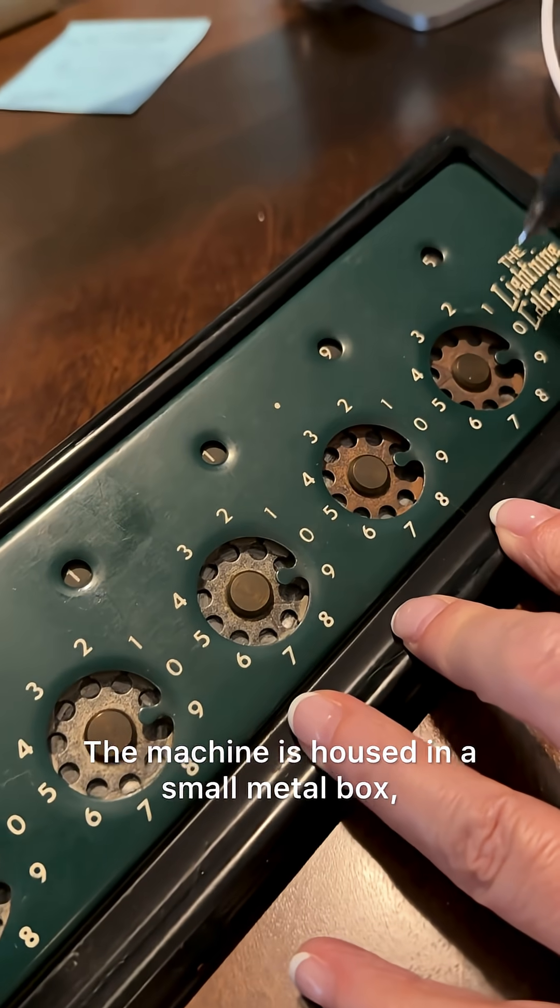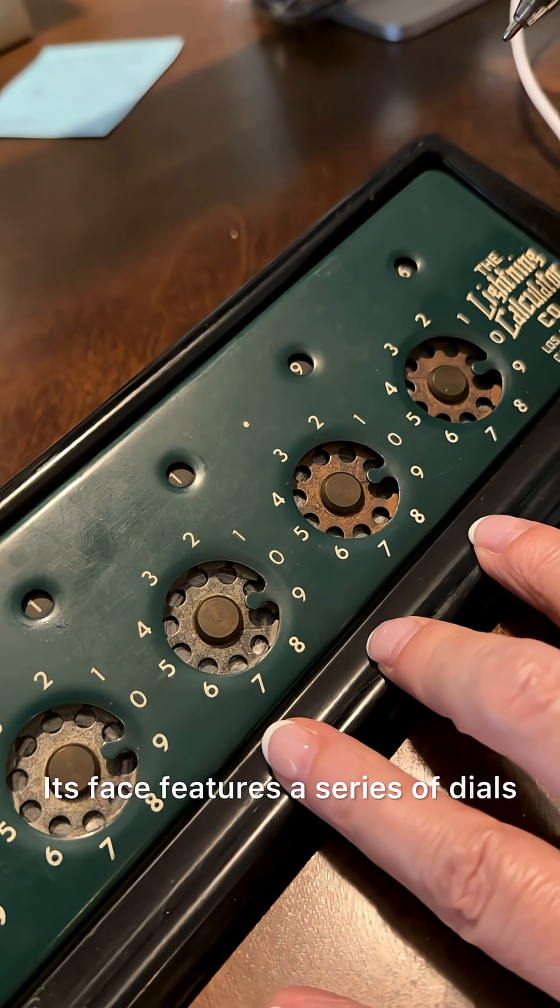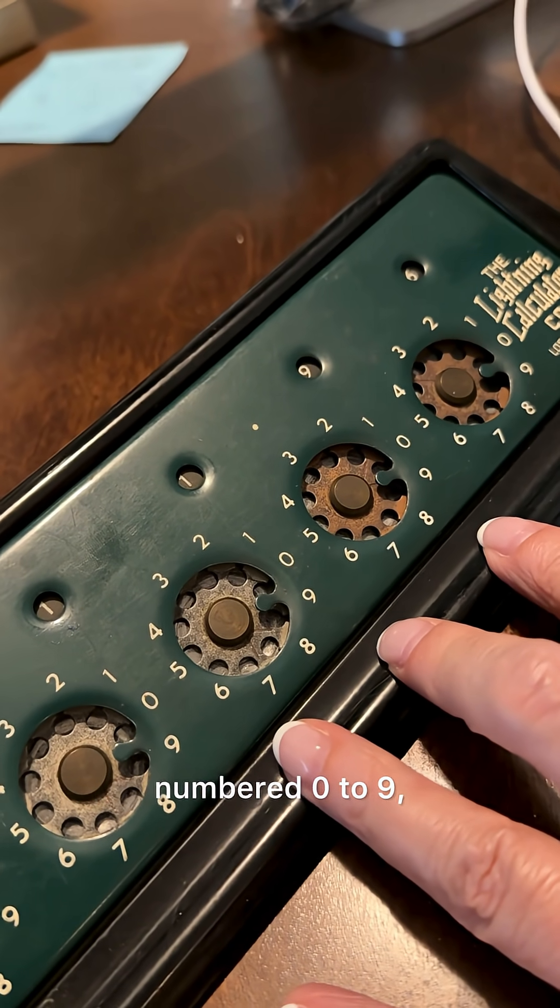The machine is housed in a small metal box, typically about 6 inches wide. Its face features a series of dials, numbered 0 to 9.